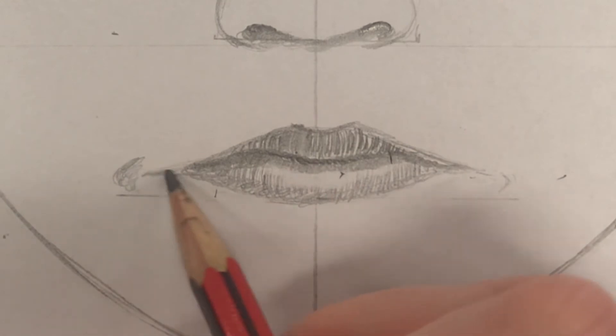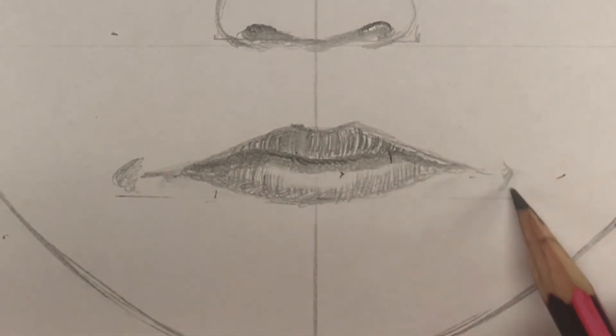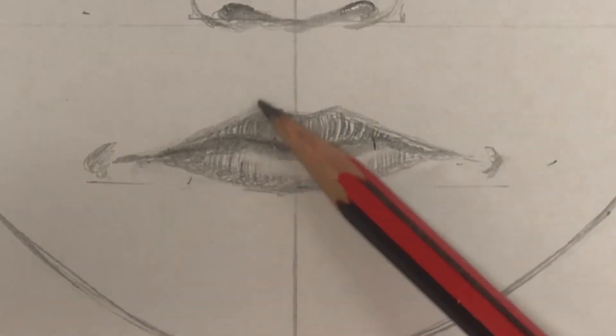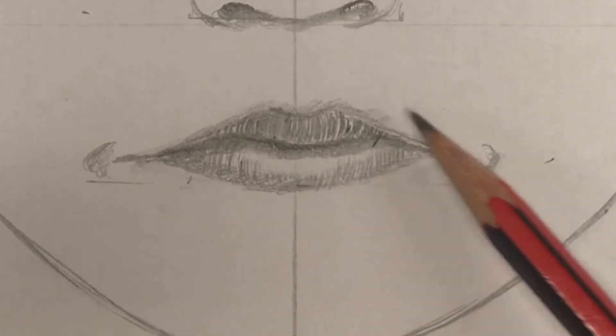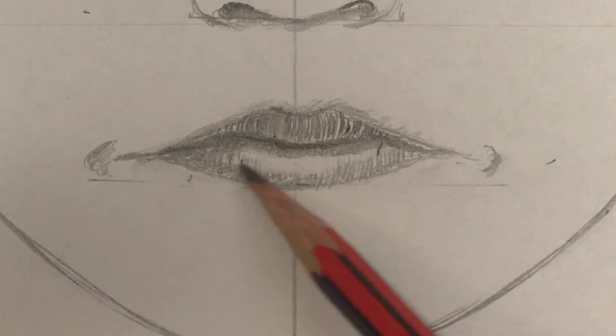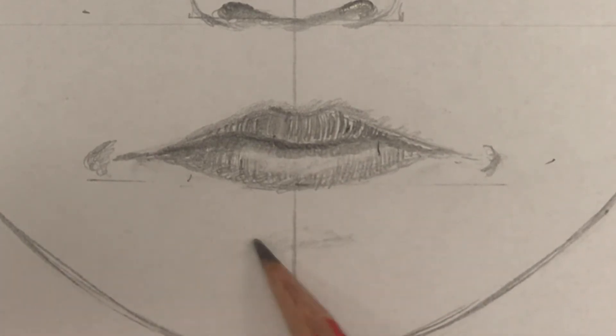Add some curved shadows at the outside corners of the lips and add a shadow below for the chin.